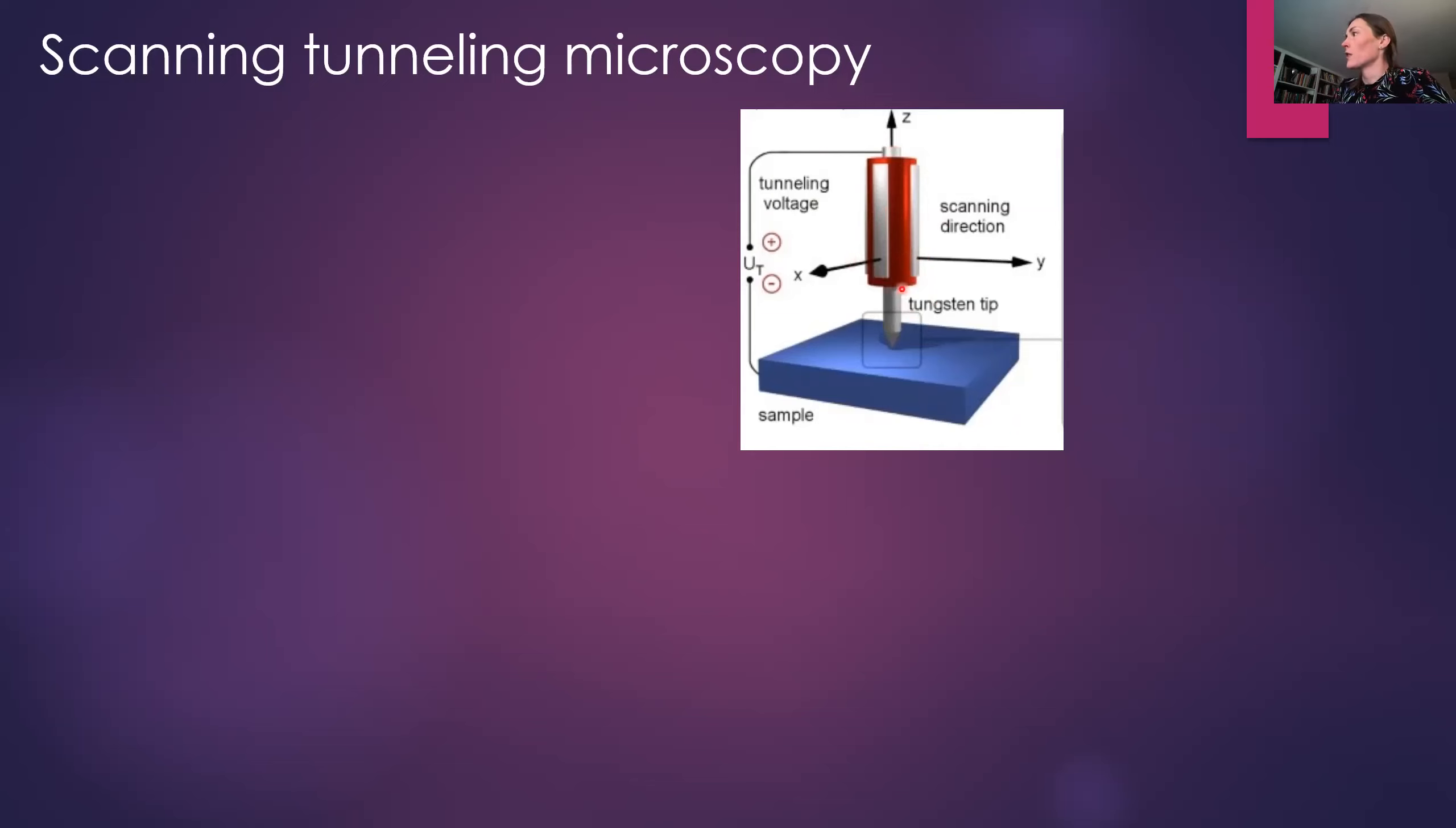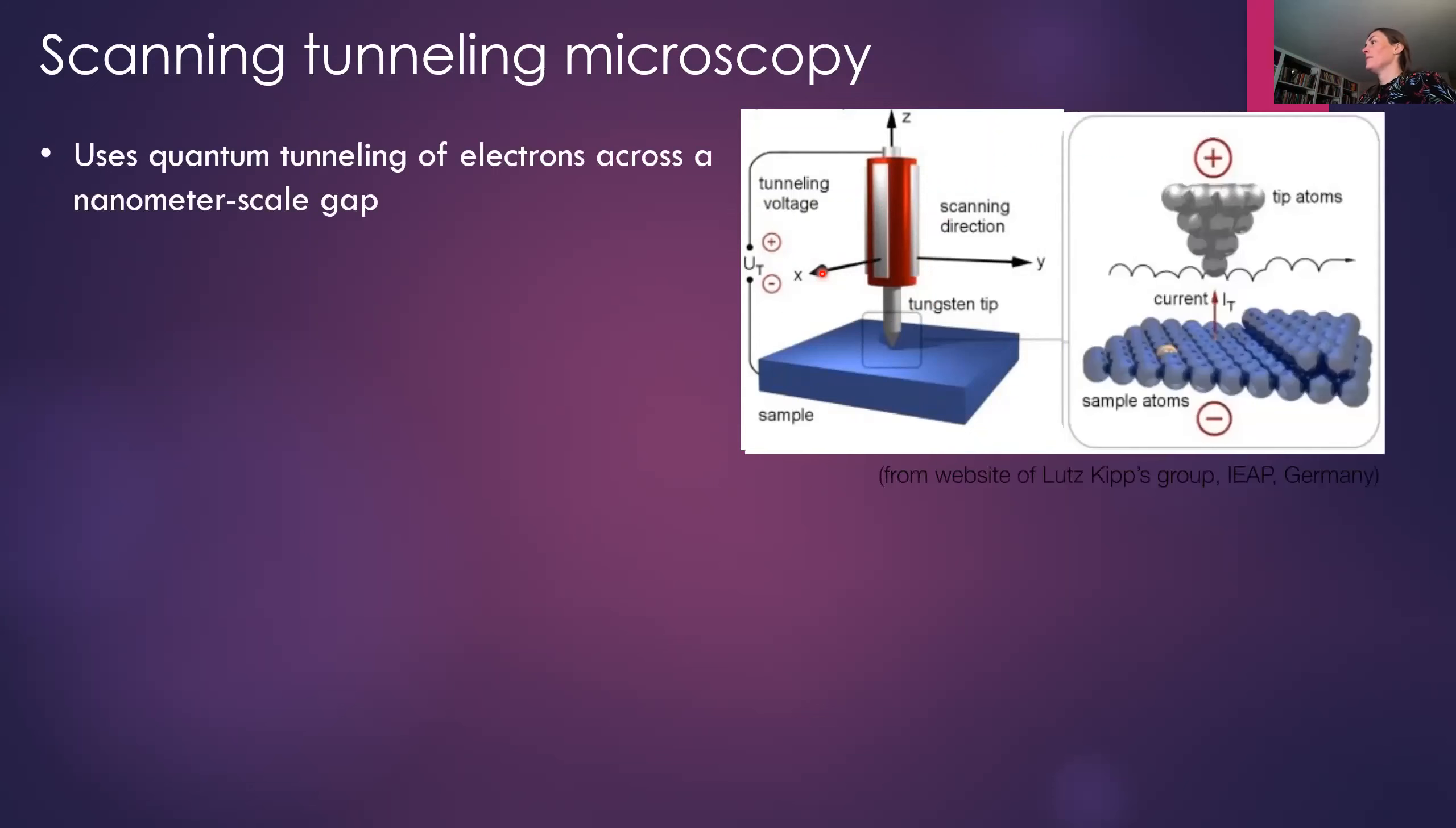So you control the distance between the tip and the sample with this high voltage on these piezos. And then you can also use the same principle to control the motion of the tip across the surface. That's how you get an image. You don't only want to just tunnel in one place, you want to tunnel in that place and compare it to the next place. On the atomic scale, you have the tip of atoms and you have the sample atoms. And this gap here is on the order of one nanometer in order for there to be some reasonable probability that an electron will tunnel from one material into the other. And in order to get that tunneling to occur preferentially in one direction, you apply a voltage between the tip and the sample.